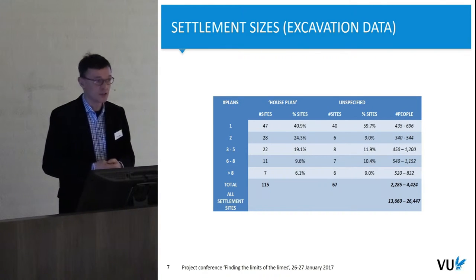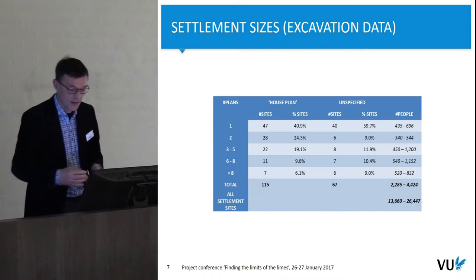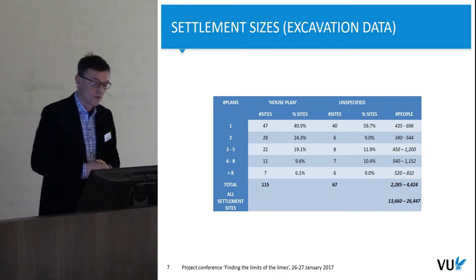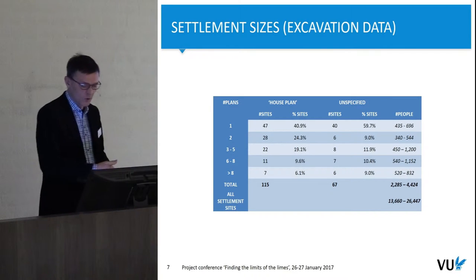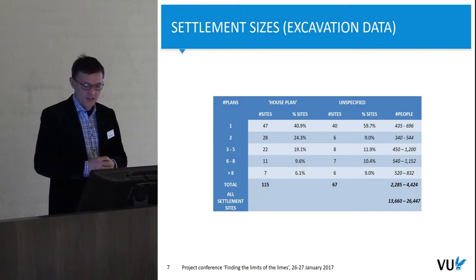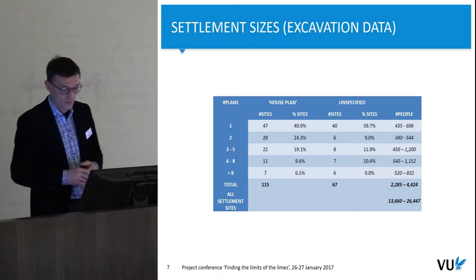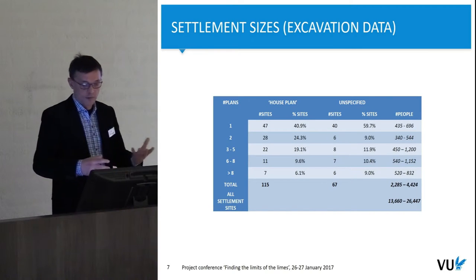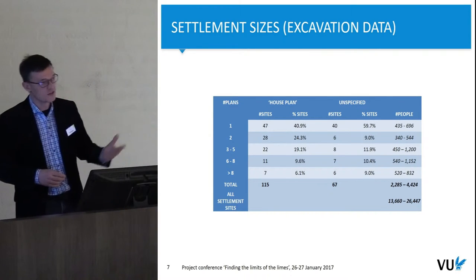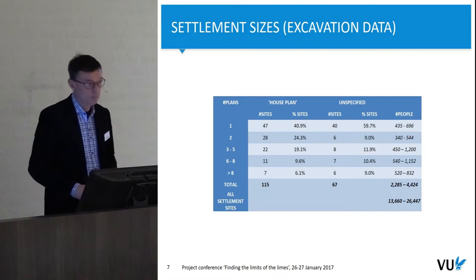These plans might not all be contemporaneous. Some have been specifically identified as house plans, others just as a plan. Taking the leap of faith that this says something about the number of households in the settlement, you can then make the same kind of calculations. This very rough calculation tells me that within the available excavation data we would have a number of people living probably between roughly 2,500 and 4,500. If you extrapolate that to all the settlement sites in the database, this would lead to a potential rural population of somewhere between 13,500 and 26,500.